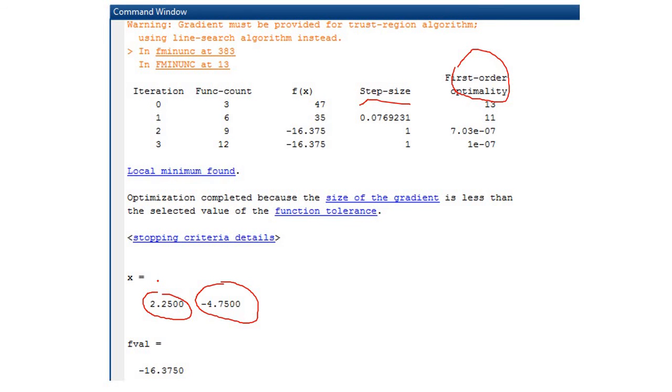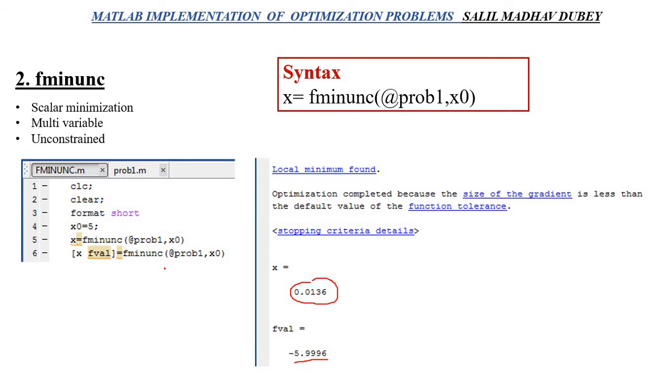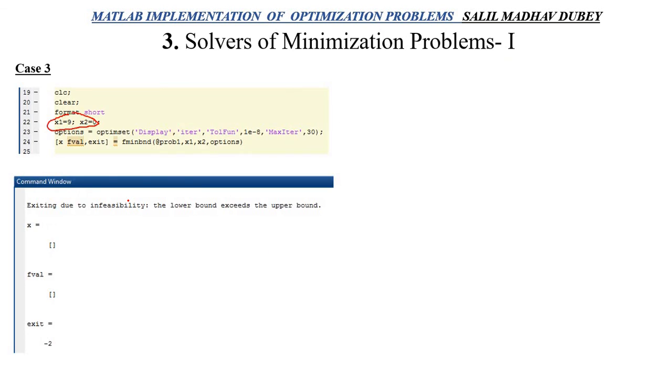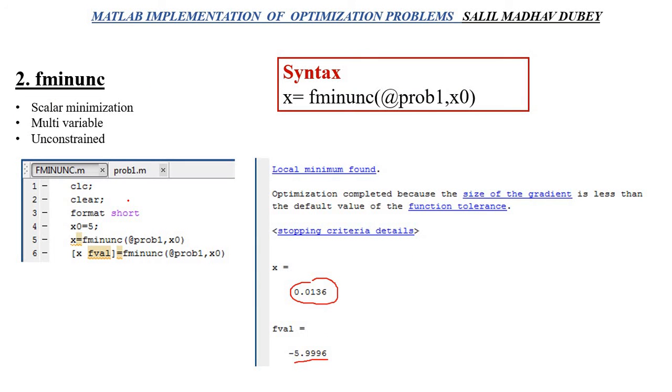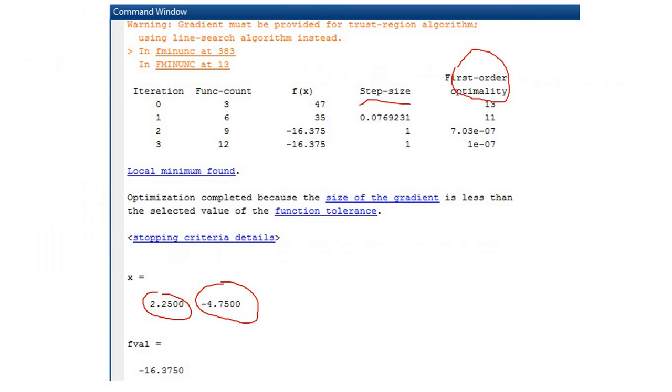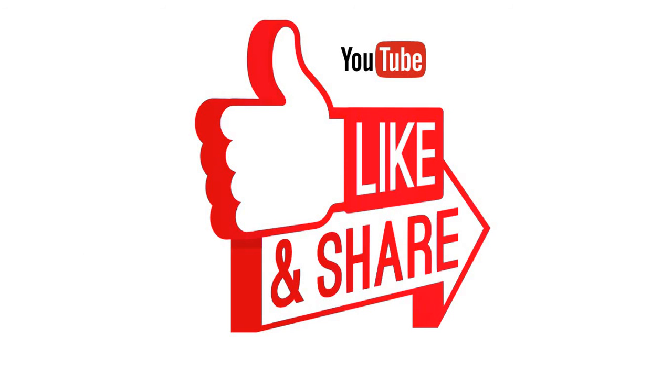So for today, I guess these two solvers fminunc and fminbnd are more than sufficient. Further we will talk about other solvers. I hope you liked the video, so please like, share, and you can comment down below. Thank you, stay fit, stay healthy.